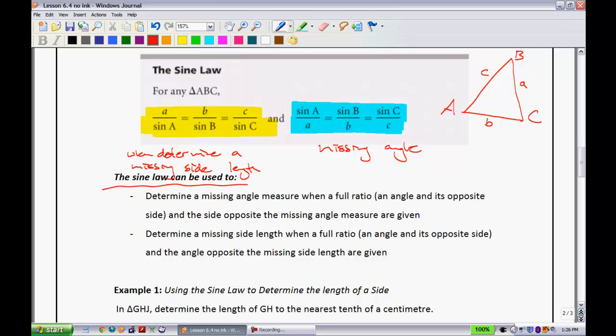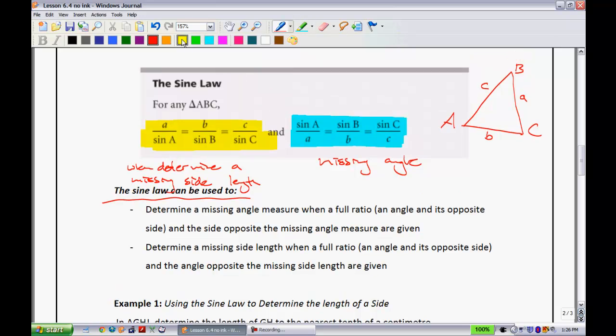So, what I've also done here is I've written a little note about how the sine law is going to be used. So, we can use the sine law when we're looking to determine a missing angle measure. When a full ratio and the opposite side, the missing angle measures are given. So, the thing I really want to focus on is what the heck do I mean when I say a full ratio. Well, a full ratio means that I have an angle, let's say angle A right here, and I have its opposite side. That's what I consider a full ratio. So, they're opposite of one another. B and little b is a full ratio, and C and little c is another ratio. In addition, I can use it when I'm trying to determine a missing side length when a full ratio, once again, is given, and the angle opposite of the missing side length, they're given.